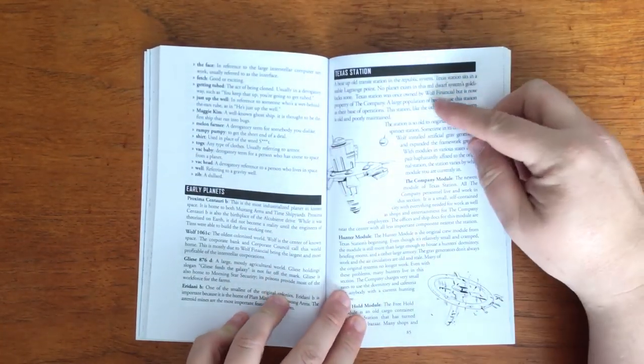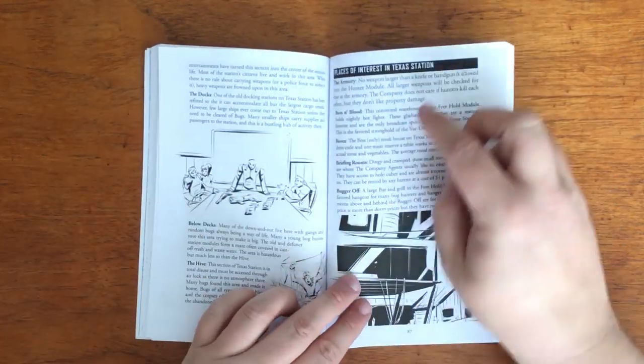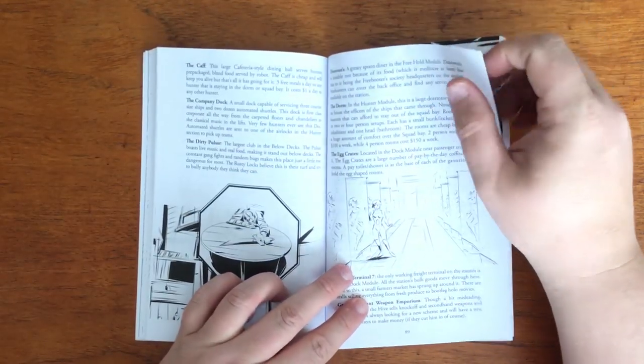It then goes into some detail on Texas Station, a place used by hunters. It talks about some of the locations, people and places of interest. We then move on to chapter 6, bugs.